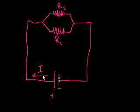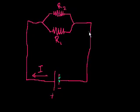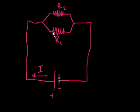In the previous video, we said that when we have devices or components in series, the current through the entire circuit is constant. But let's think about what happens here. The electrons are flowing at a given rate, and then they have a choice — some of them can take the top path, some can take the bottom path.